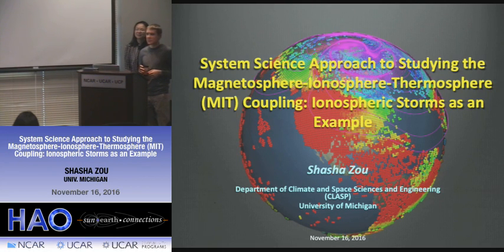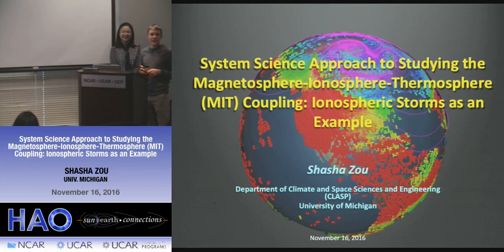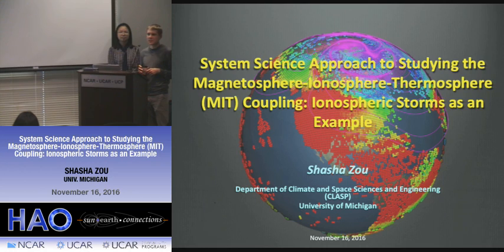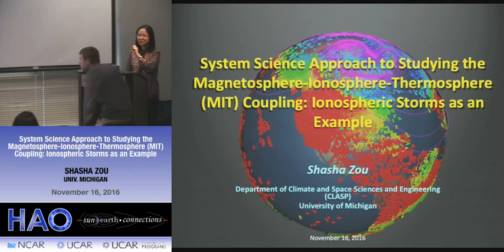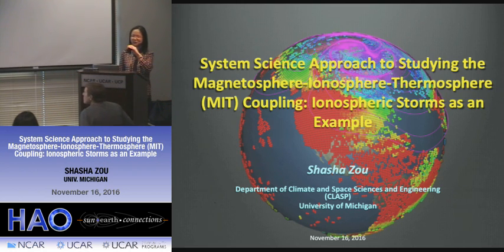Today's speaker is Shaxe Zhu from the University of Michigan. Her interests are in magnetosphere-ionosphere-thermosphere coupling and geomagnetic storms. Prior to Michigan, she attended the University of Science and Technology in China, then UCLA for her PhD, then moved to Michigan as a researcher, and last year became an assistant professor. She will talk about a system science approach to studying MIT coupling, using ionospheric storms as an example.